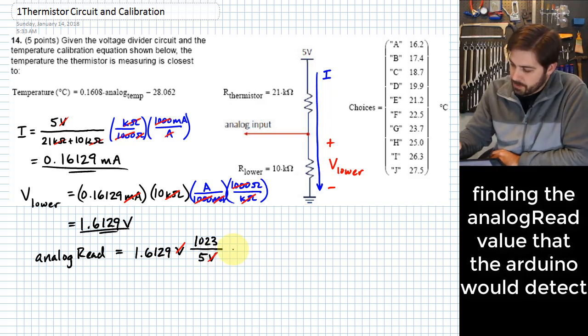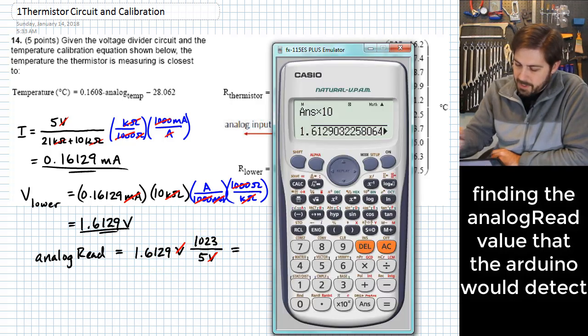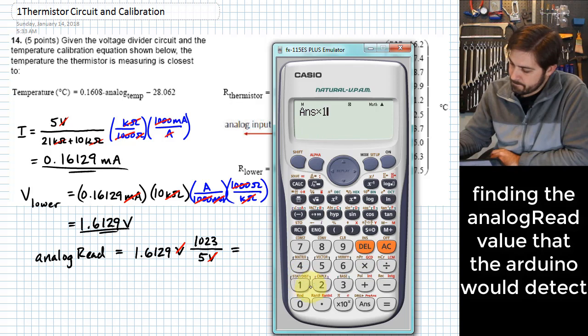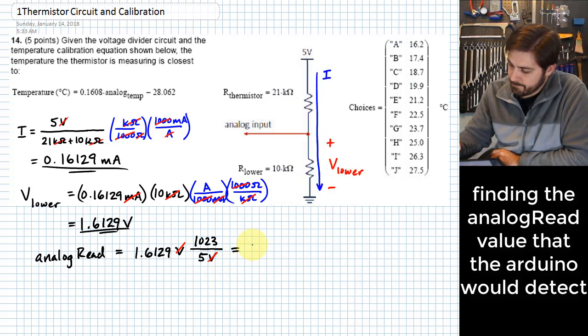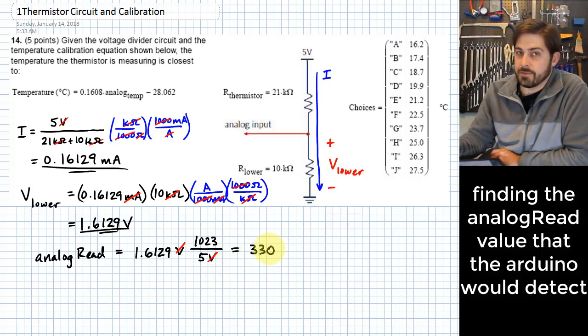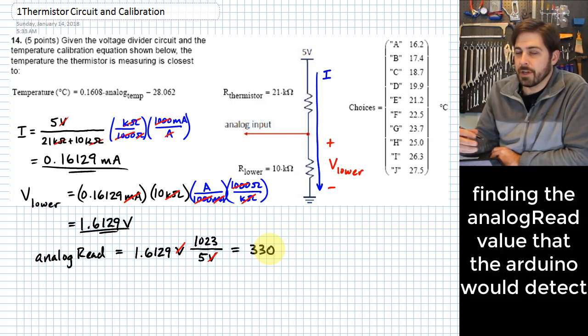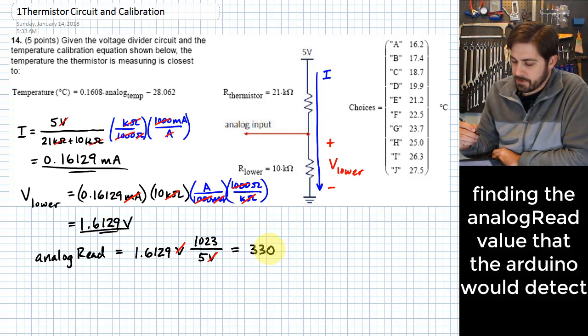And so what we end up with out of here is just taking that previous result and multiplying it by 1,023 dividing by 5, which gives me 330. And that doesn't really have units because that's just a number that represents voltage. It's a number that's in the programming language of the Arduino.